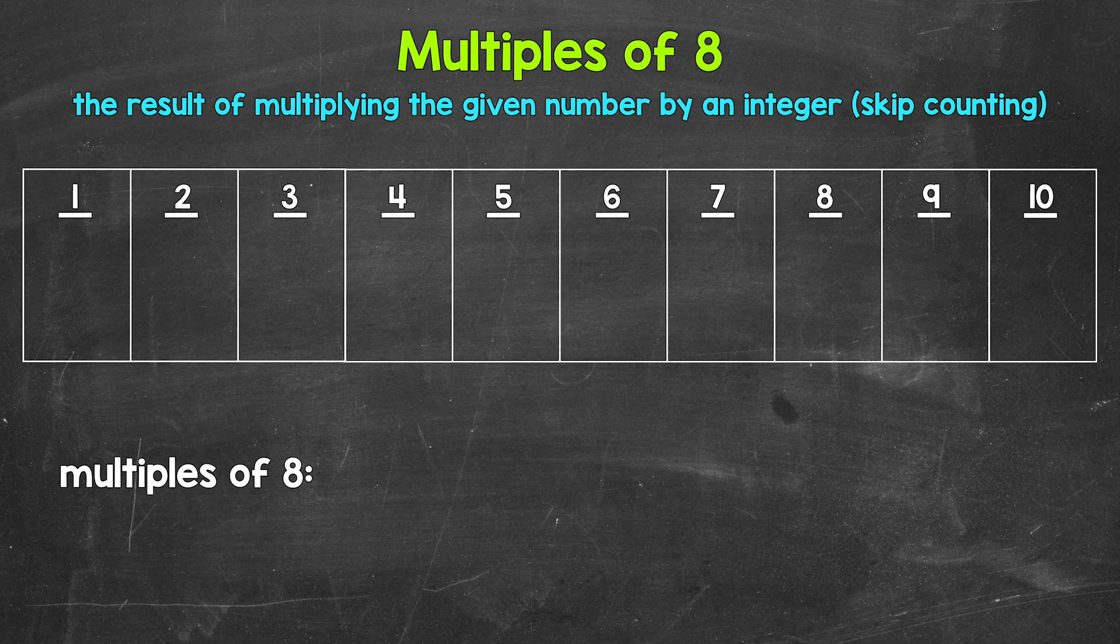Now remember, a multiple is the result of multiplying the given number by an integer. So one times eight, two times eight, three times eight, so on and so forth. Another way to think about multiples is to skip count, so all of the numbers something is going to hit when counting up by that number. Those are all going to be multiples.